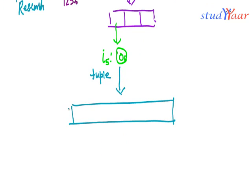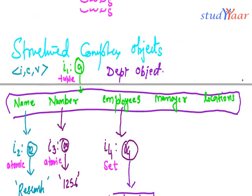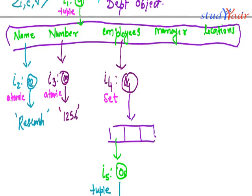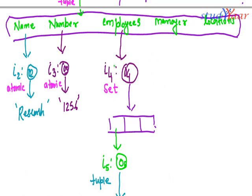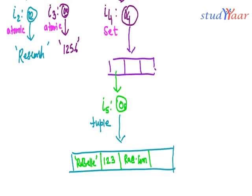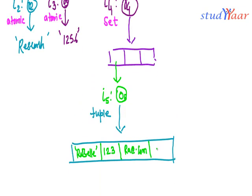This employee tuple has simple values. It would have a name — let's suppose the name of the employee is 'Rebel'. Next we would have an employee ID — let's suppose employee ID is 123. Then we would have an email — let's suppose this email is ra@something.com. And finally we would have a department name attribute for this employee.